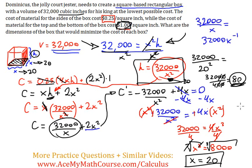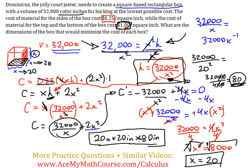So the dimensions are 20 inches by 20 inches by 80 inches. These are the dimensions for the box with the least possible cost, and that's it.